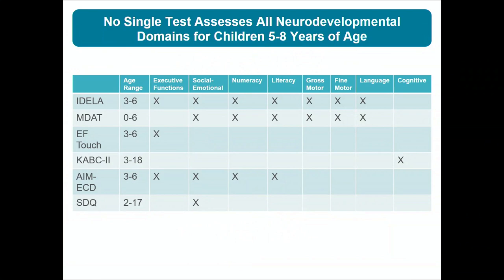We're using the IDELA, MDAT, EF Touch (executive functions), the Kaufman KABC-2, the AMECD anchor items, and the Strengths and Difficulties Questionnaire. Most of these only go up to age six, and the two that extend past age six — the Kaufman and the SDQ — each assess only one domain: cognitive and social-emotional, respectively. So there's a real gap for seven- and eight-year-olds.